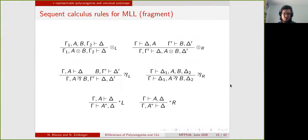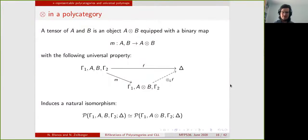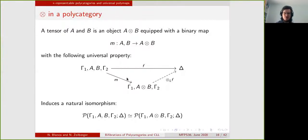Just for context, I recall the sequent calculus rules for multiplicative linear logic. Using those, we define a tensor object: a tensor object will be an object that comes with a binary map that goes from A, B into A tensor B — think of vector spaces, where this is the map that goes from two vector spaces into their tensor product. It should have a universal property saying that any map having A and B in the input factors uniquely through this binary map M.